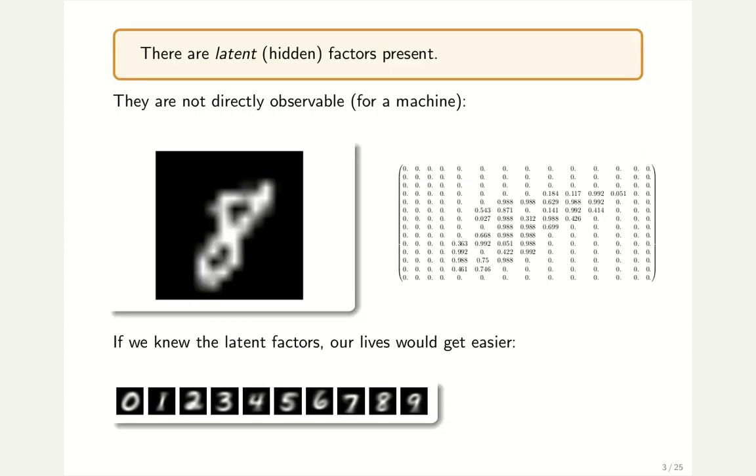This lecture wouldn't be called inference in latent variable models if we were not to talk about latent variables. And this is the slide where we will introduce the concept of latent and hidden variables. The nature of a latent variable is that it's not directly observable for a machine.